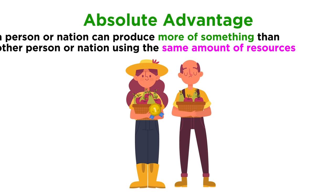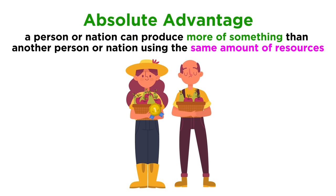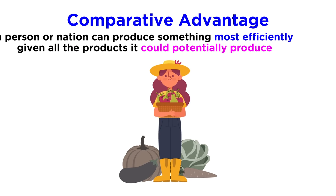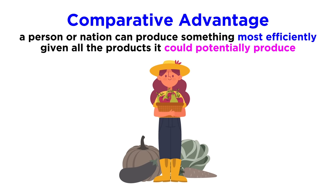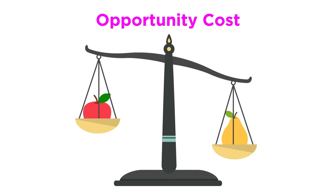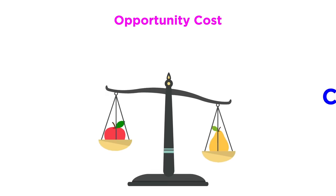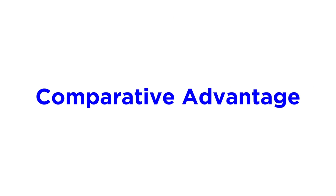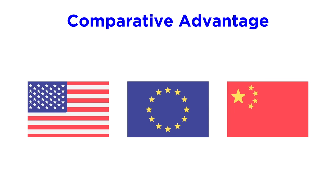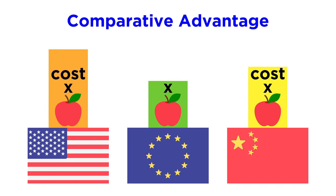Absolute advantage means a person or nation can produce more of something than another person or nation using the same amount of resources. Comparative advantage, on the other hand, means a person or nation can produce something most efficiently given all the products it could potentially produce. This considers the opportunity cost of producing one good over another. In other words, comparative advantage is the circumstance in which an entity gives up comparatively less, or has a lower opportunity cost, than some other entity when making the same amount of the same product.